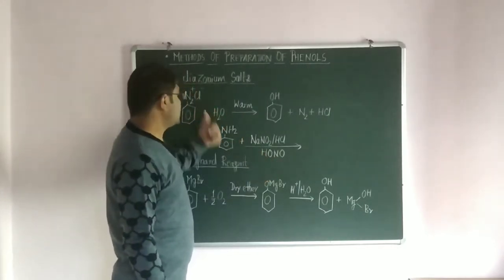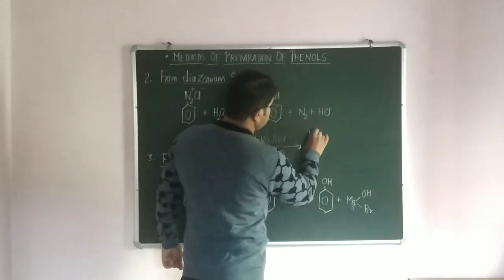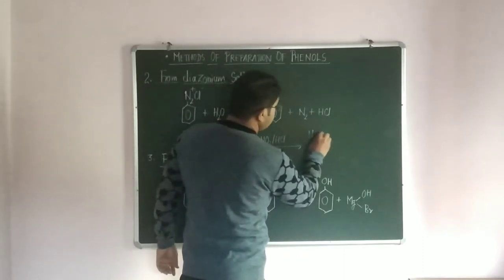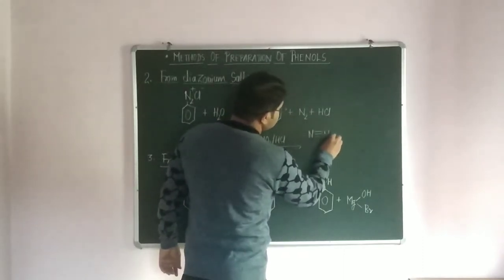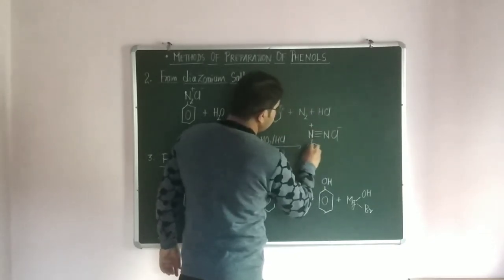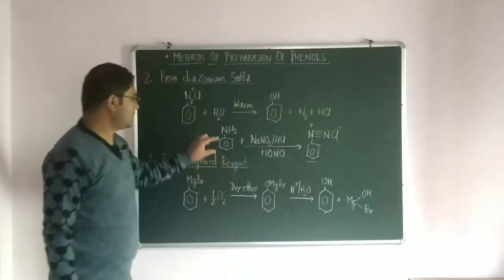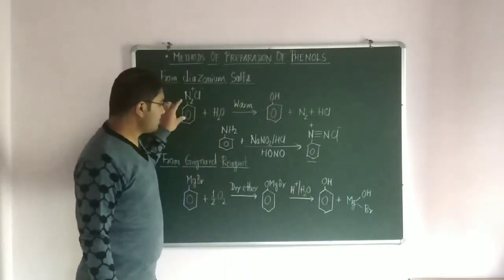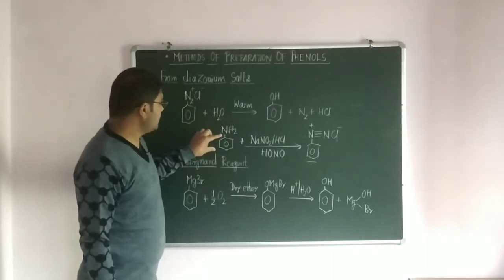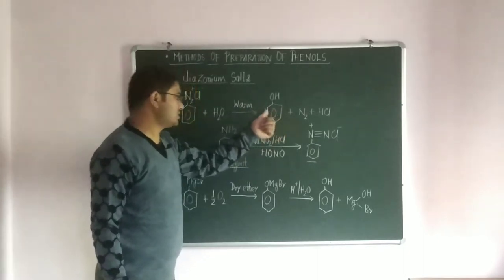When aniline is treated with HNO2 (nitrous acid), it forms benzene diazonium salt, which is required for the preparation of phenol. We represent this as N2Cl — that is N⁺ and Cl⁻ on the ring. So N2Cl is formed from aniline, and then this N2Cl is used for the preparation of phenol.